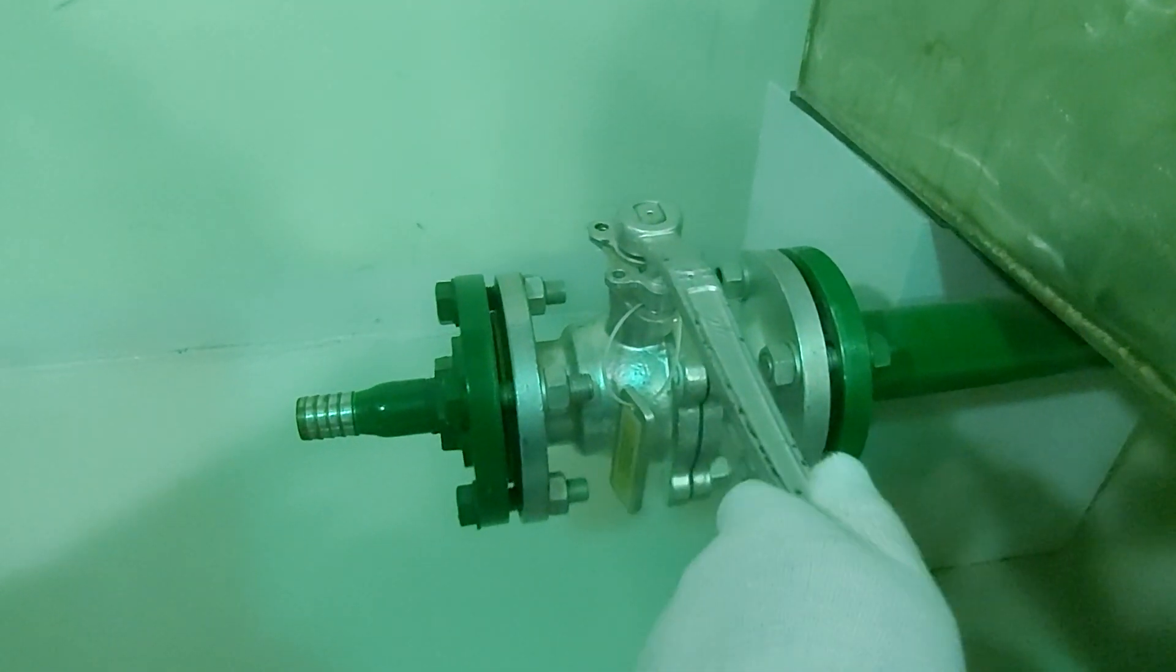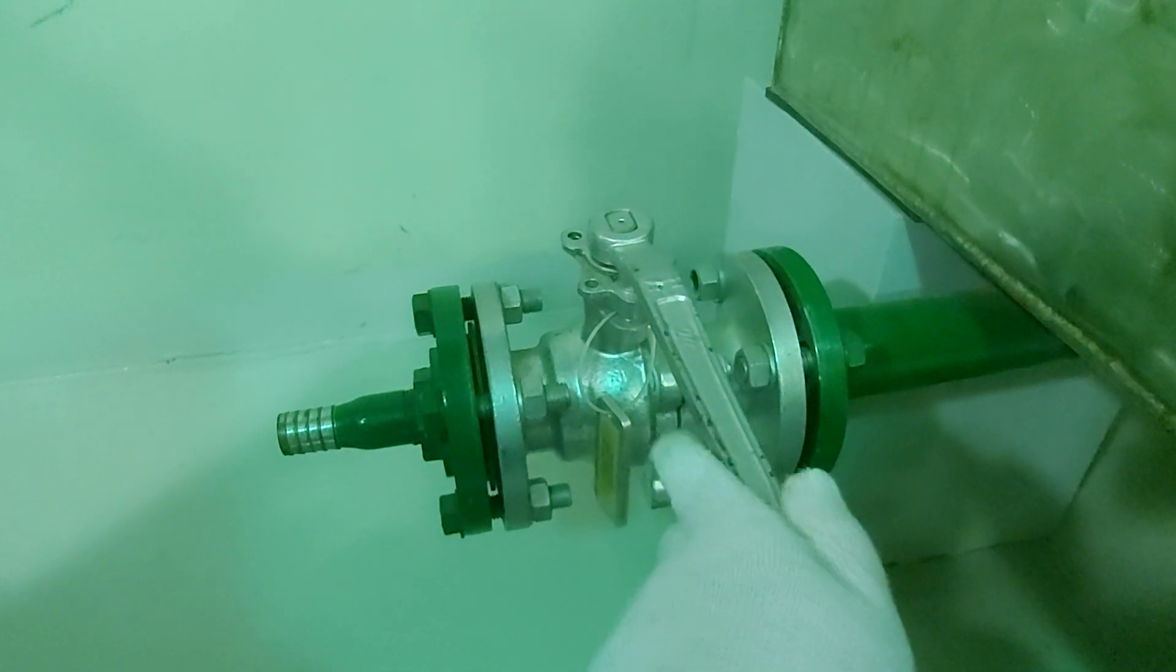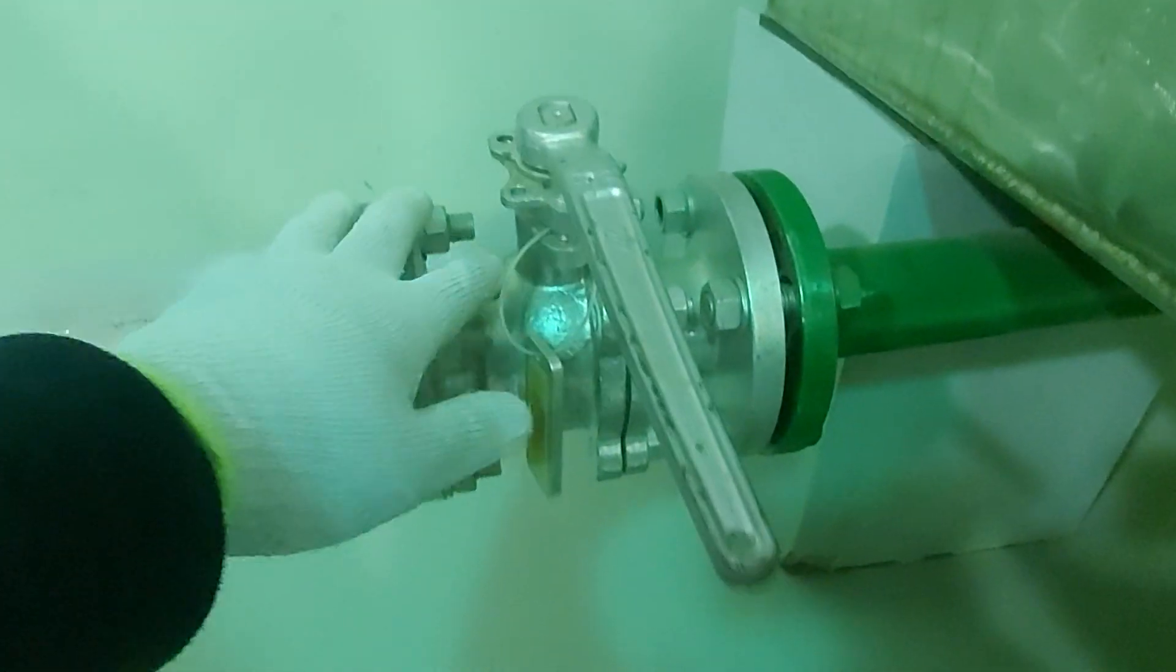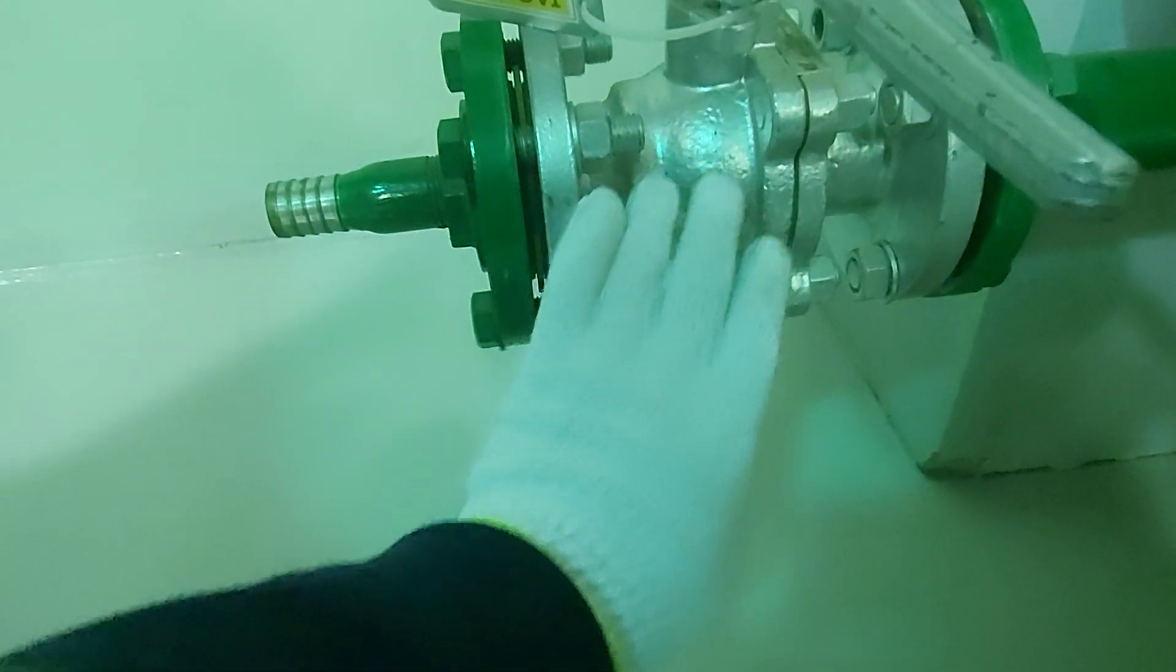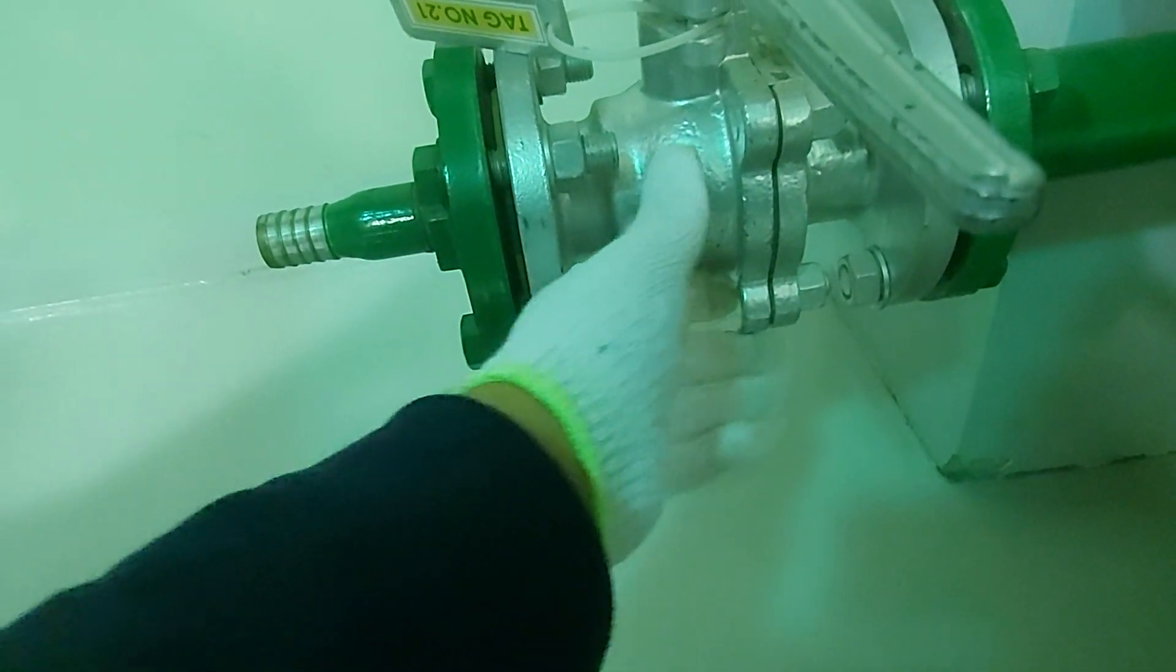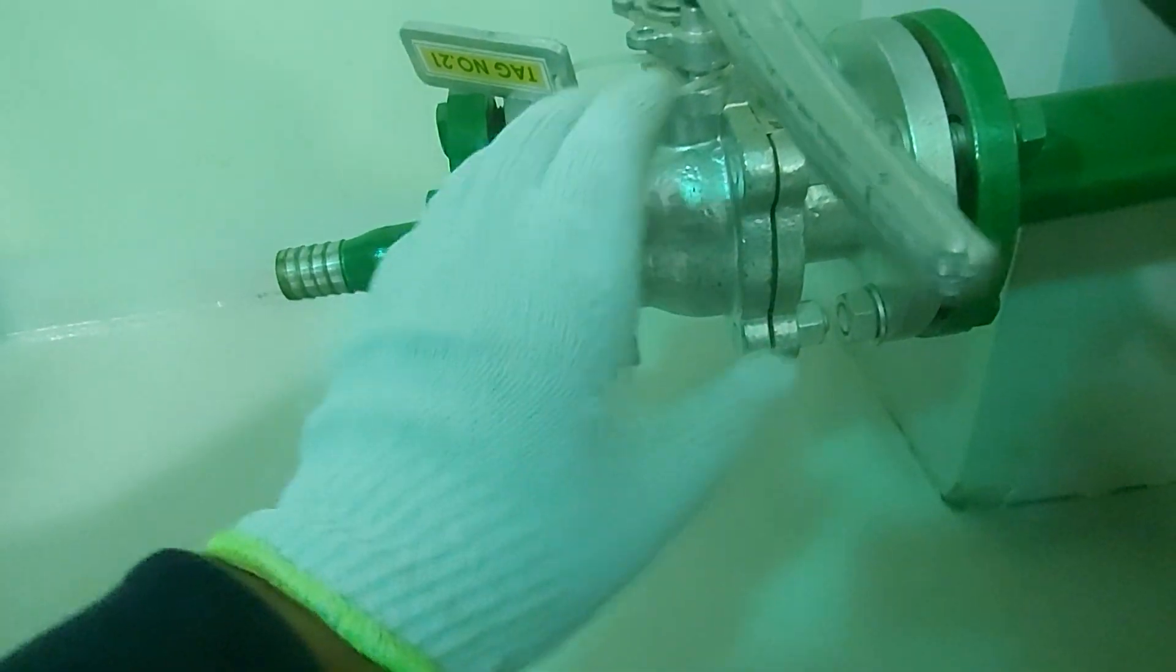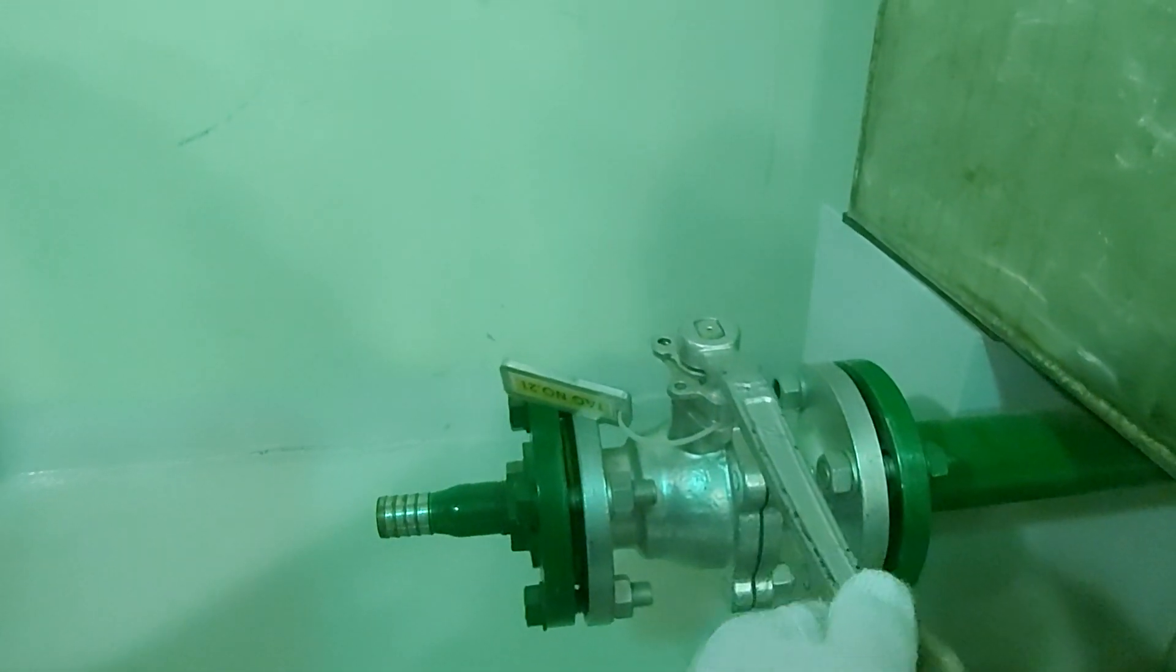So the characteristics, the shape characteristics of the ball valve are its round spherical body because there is a ball inside it, and the control handle or lever which is used to open and close this valve.